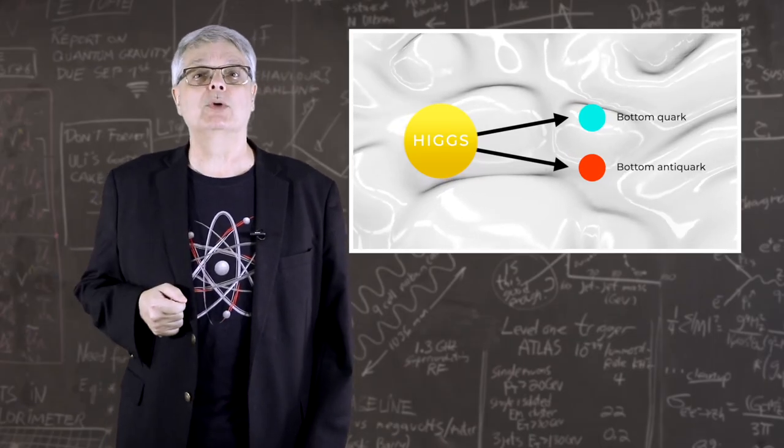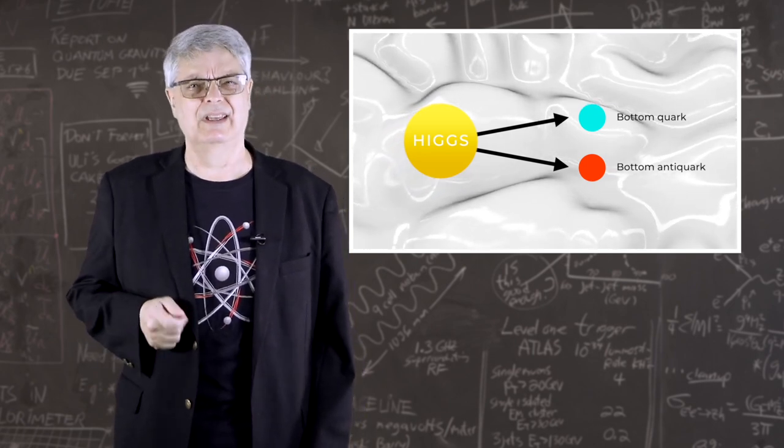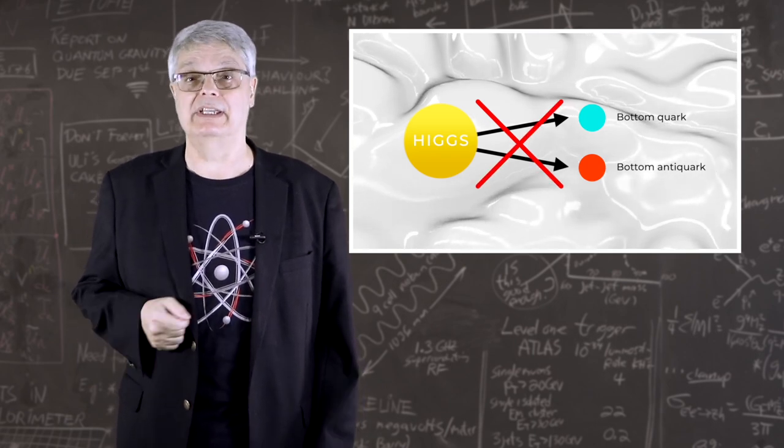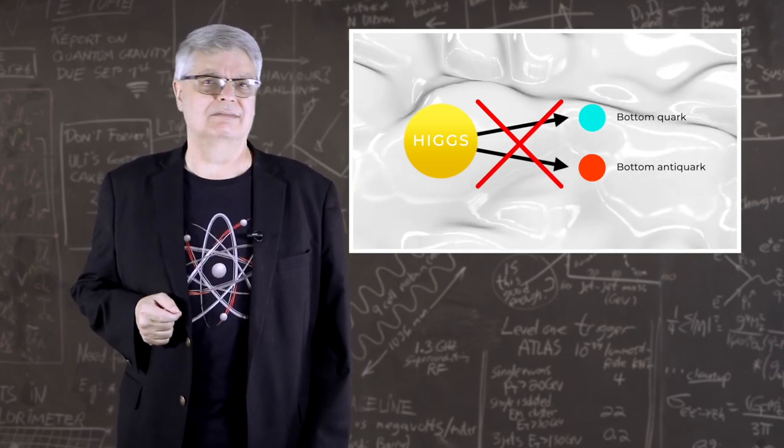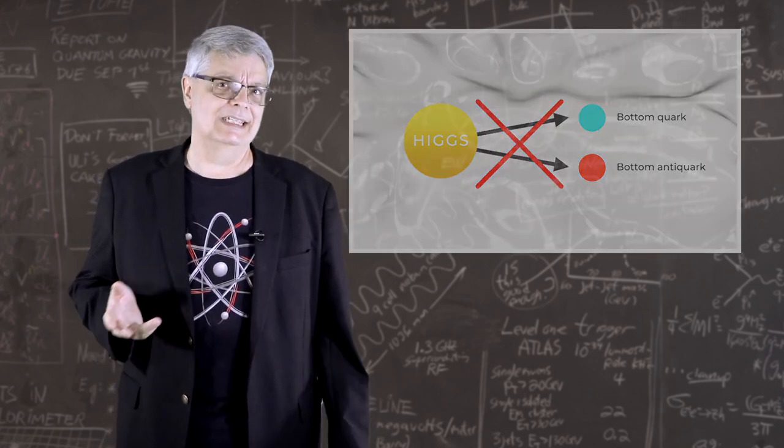But there are other ways to make bottom quark-antiquark pairs, and those ways are way more common. In fact, you expect to see tons of collisions in which bottom quark pairs are produced at the LHC. The trick is finding the tiny fraction that came from Higgs boson decays. That's super hard, and it wasn't a realistic way to discover the Higgs boson.